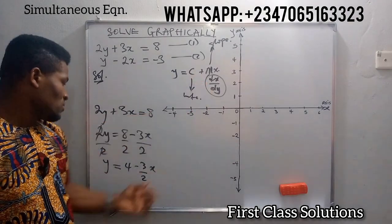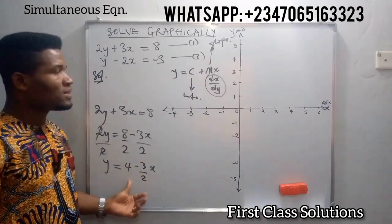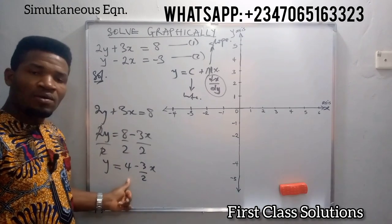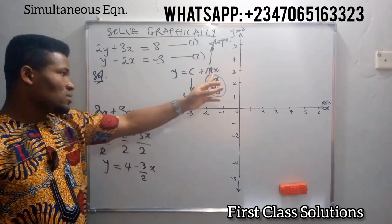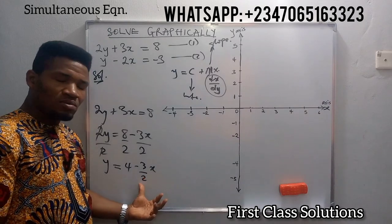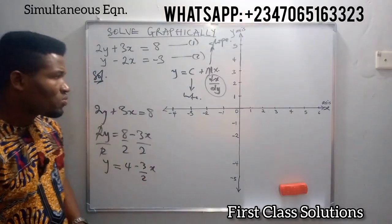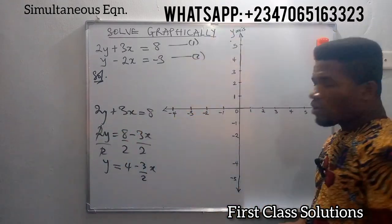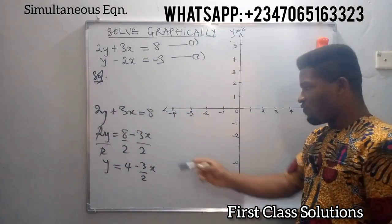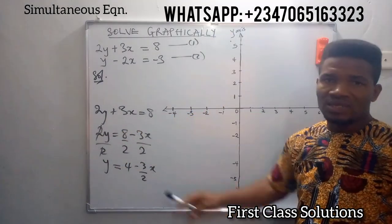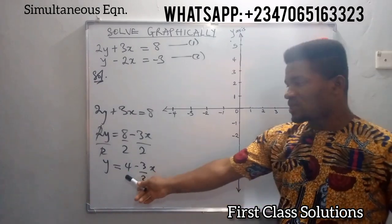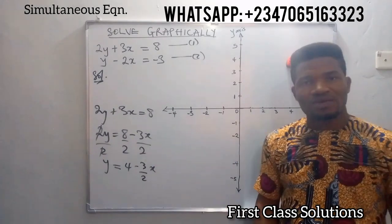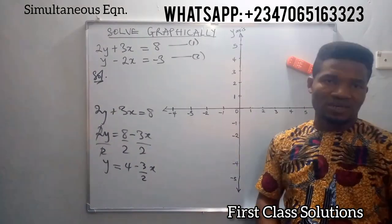Our c is now 4 — that is the constant term, that is the intercept of the equation. It is now 4. Whereas the gradient, m, is now minus 3 over 2. Coming to this graph, we discovered that we have a negative gradient and a positive intercept. We have 4 as an intercept and minus 3 over 2 as a gradient.